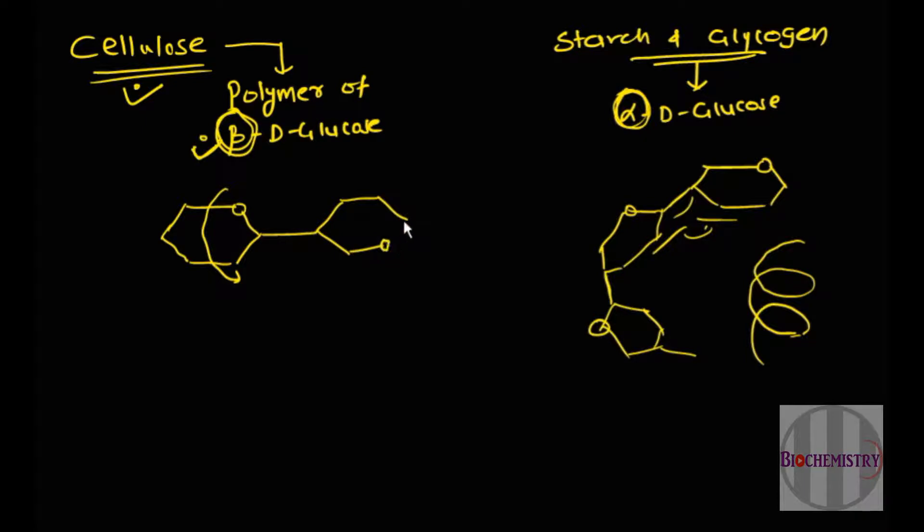Now oxygen is over here like this. Because of the 180 degree flipping of the successive glucose molecule, this glycosidic bond is in a straight line. So this glucose chain becomes fully extended.